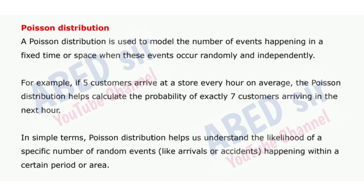Next important short question: Poisson distribution. A Poisson distribution is used to model the number of events happening in a fixed time or space when these events occur randomly and independently. For example, if five customers arrive at a store every hour on average, the Poisson distribution helps calculate the probability of exactly seven customers arriving in the next hour. In simple terms, Poisson distribution helps us understand the likelihood of a specific number of random events — like arrivals or accidents — happening within a certain period or area.